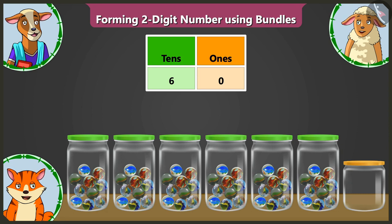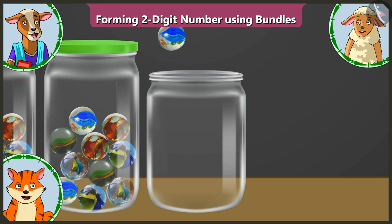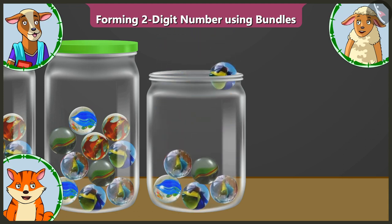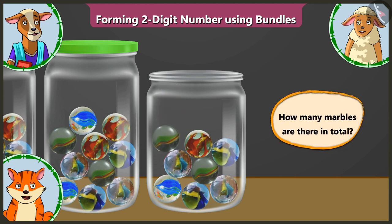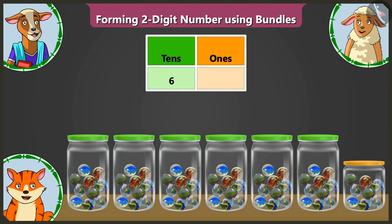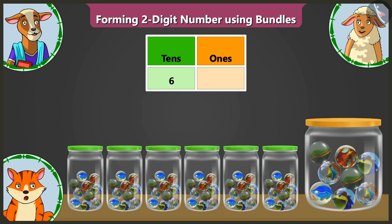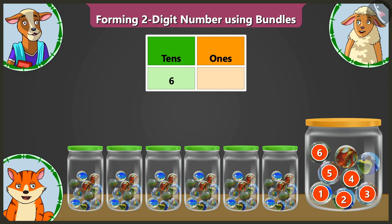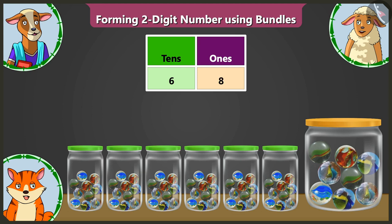Now look — in this empty 7th jar, I am putting some marbles in it. Tell me, Lily, how many marbles are there in total? In the first 6 jars there are groups of 10 marbles each — 6 groups of 10. That is why in the 10s box we have to write 6. Well done, Lily. Now in the 7th jar we have put 1, 2, 3, 4, 5, 6, 7 and 8 marbles. So in the 1s box we have to write 8.